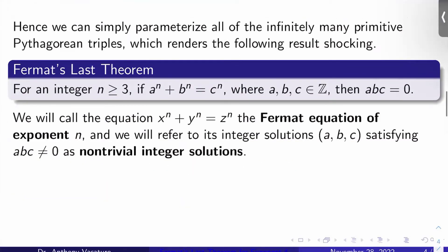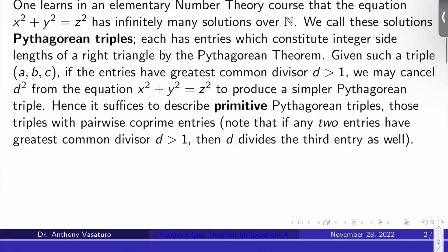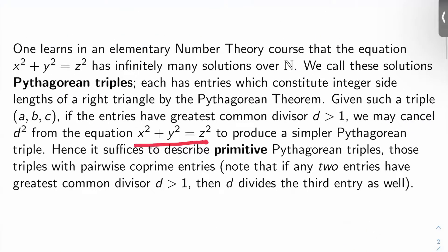So that makes the following theorem incredibly shocking. Fermat's Last Theorem: if n is an integer that's at least 3, then if a to the n plus b to the n equals c to the n, where a, b, and c are integers, then at least one of a, b, or c is 0. In other words, the Fermat equation with exponent 2 has infinitely many interesting solutions over the positive integers — by interesting, I mean all of the entries are non-zero — and they're all succinctly and easily parameterizable.